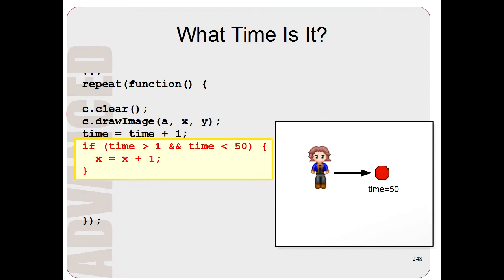So now let's bring in a concept of time. So let's say we want the person to move to the right but stop moving to the right at a certain point in time. So let's say when time is 50, the person should stop. Now we do that by adding these lines of code here.